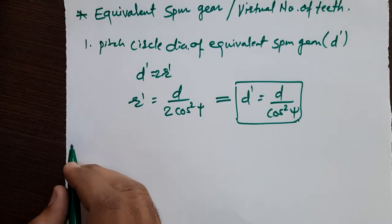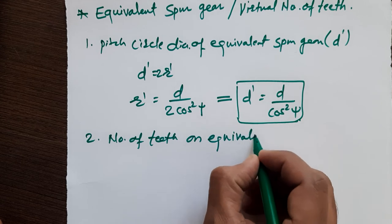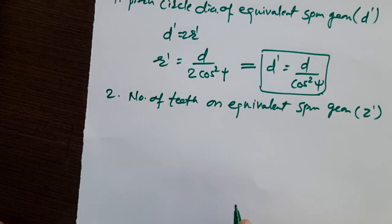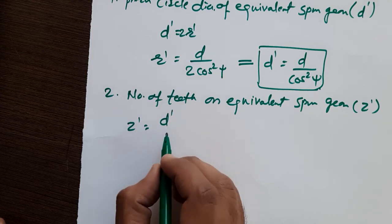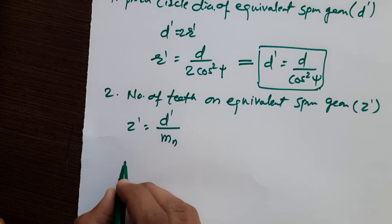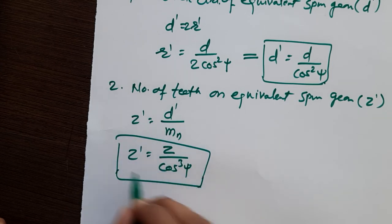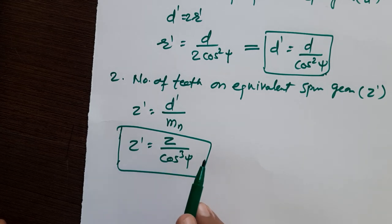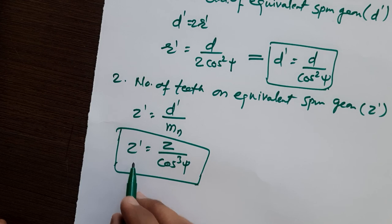The second parameter is the number of teeth on the equivalent spur gear, denoted by z'. z' equals the pitch circle diameter of the equivalent spur gear divided by the module of the equivalent spur gear, which is d' divided by mₙ (normal module). This simplifies to z' equals z divided by cos³ψ, where z is the number of teeth on the helical gear and ψ is the helix angle. Using these two formulas for d' and z', you can find the pitch circle diameter and number of teeth on the equivalent spur gear.